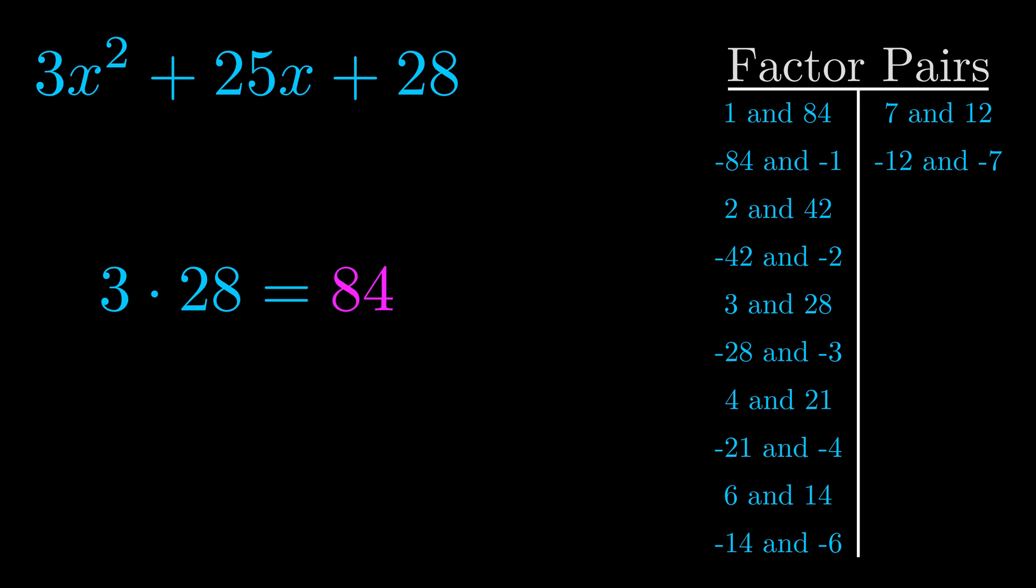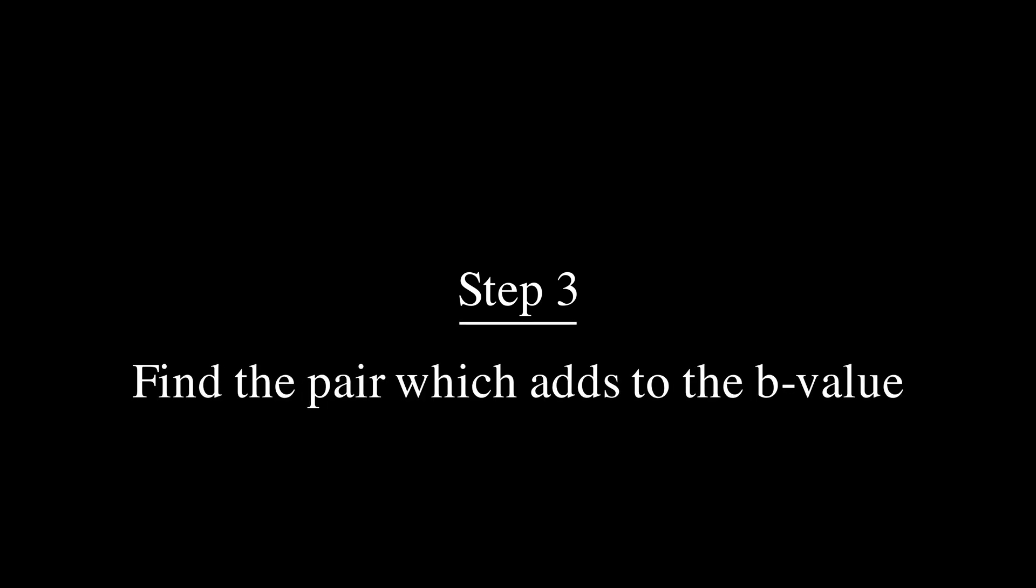Now once you have these factor pairs, the goal is to find which of these pairs adds to the b value. The b value is the coefficient on the x term.